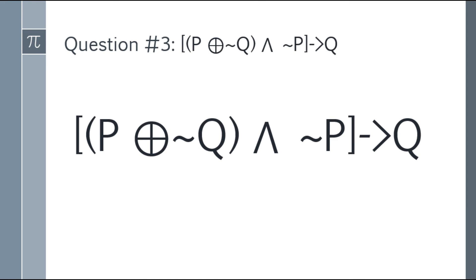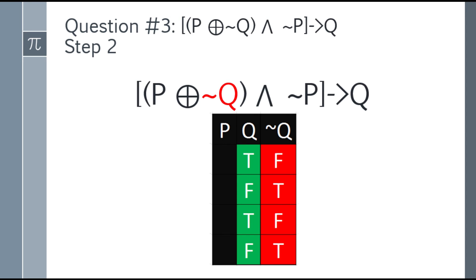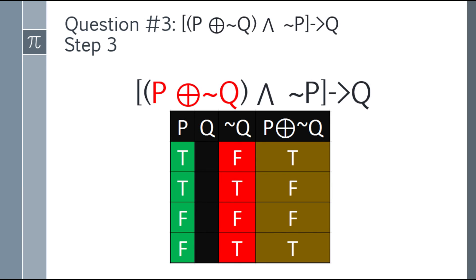Question three: the quantity (P XOR ¬Q) AND ¬P, with implication to Q. Step one: set up the basic truth table. Step two: negate Q — false, true, false, true. Now solve P XOR ¬Q: XOR is true only when exactly one statement is true. First row: true and false — one true, so true. Second row: true and true — two trues, so false. Third row: false and false — false. Fourth row: false and true — one true, so true. Then negate P: false, false, true, true.